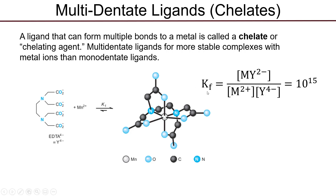The equilibrium formation constant for EDTA binding to any metal with a plus two or plus three charge generally has a massive value. A typical formation constant for EDTA binding to a divalent metal like manganese, calcium, or magnesium is around 10 to the 15th. If the charge on the metal is even higher or it's an extremely small plus-two cation, this KF value can be even larger — around 10 to the 25th or 10 to the 27th. The magnitude of this equilibrium constant confirms that the complex between the chelating agent and the metal ion is extremely strong and the bonds are extremely unlikely to be broken.